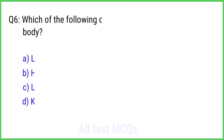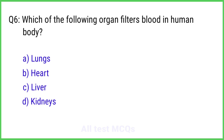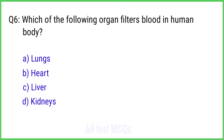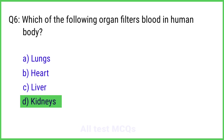Question No. 6. Which of the following organs filters blood in the human body? The right answer is Option D: Kidneys.